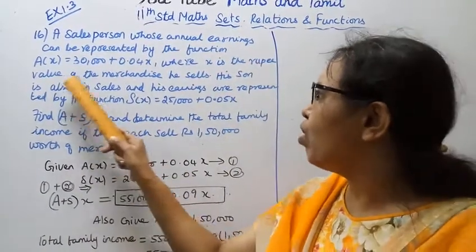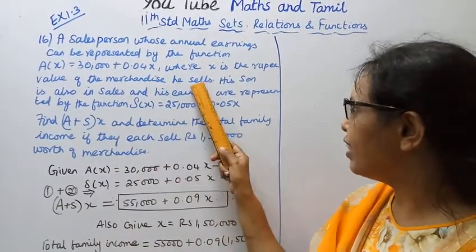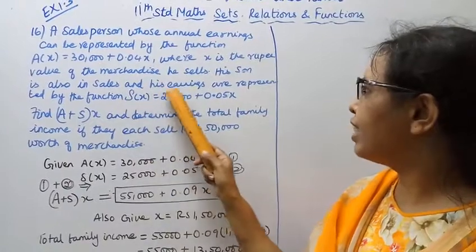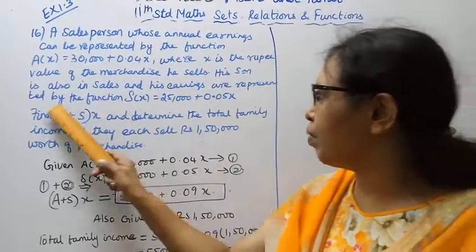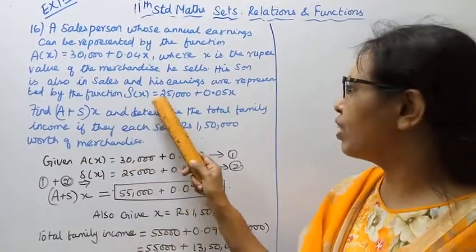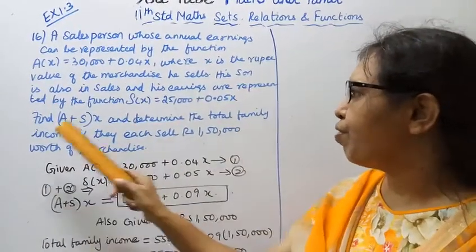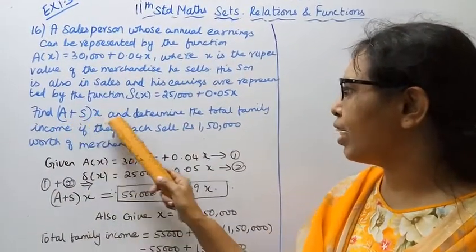is the rupee value of the merchandise he sells. His son is also in sales and his earnings are represented by the function S(x) = 25,000 + 0.05x. Find (A+S)(x) and